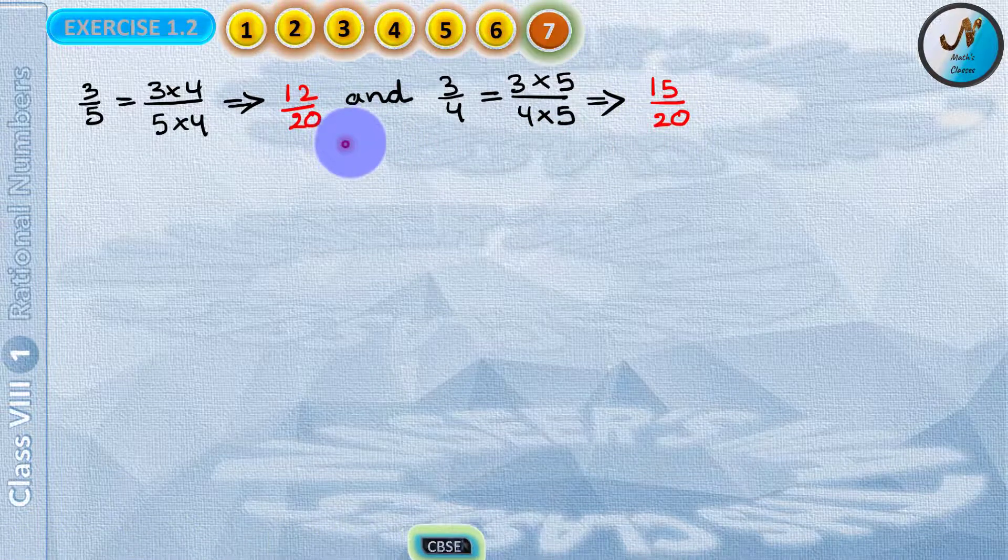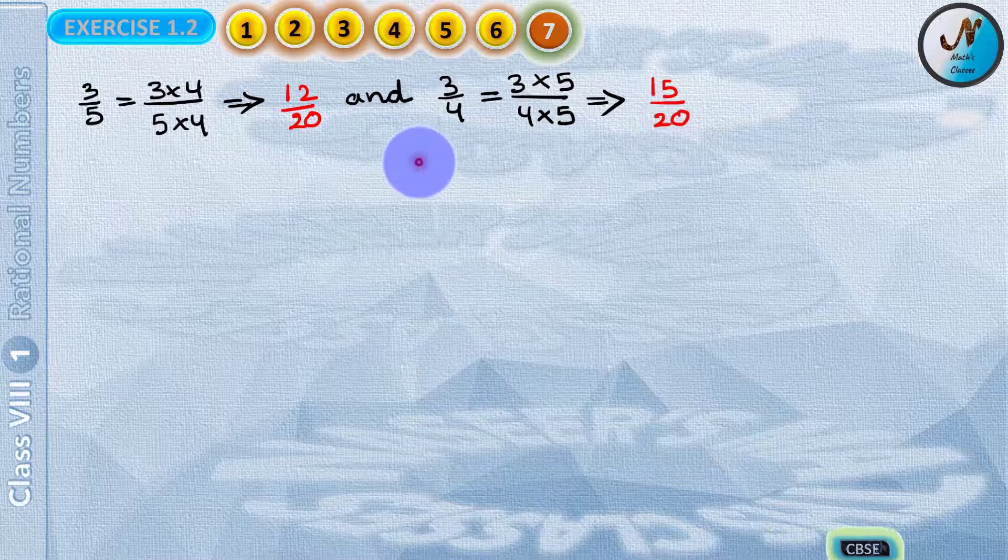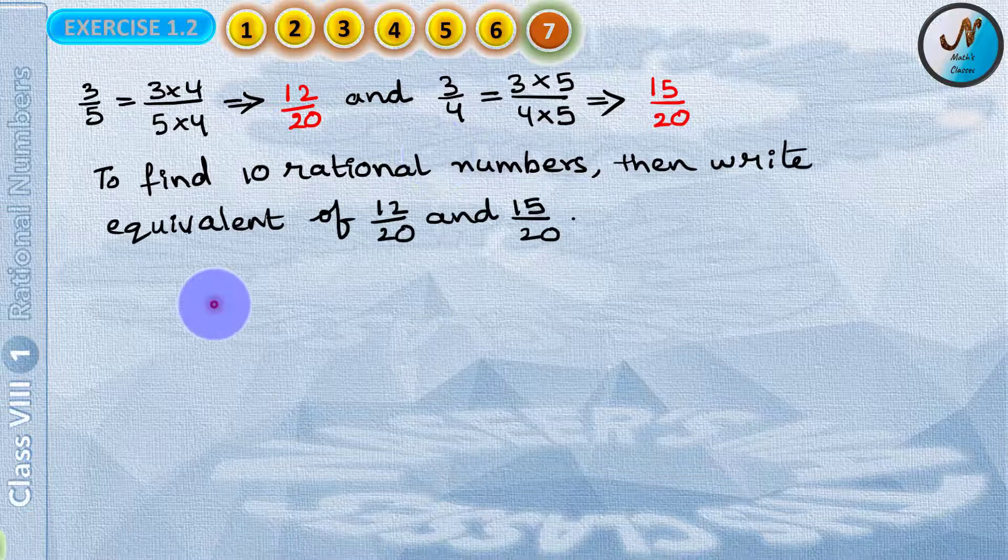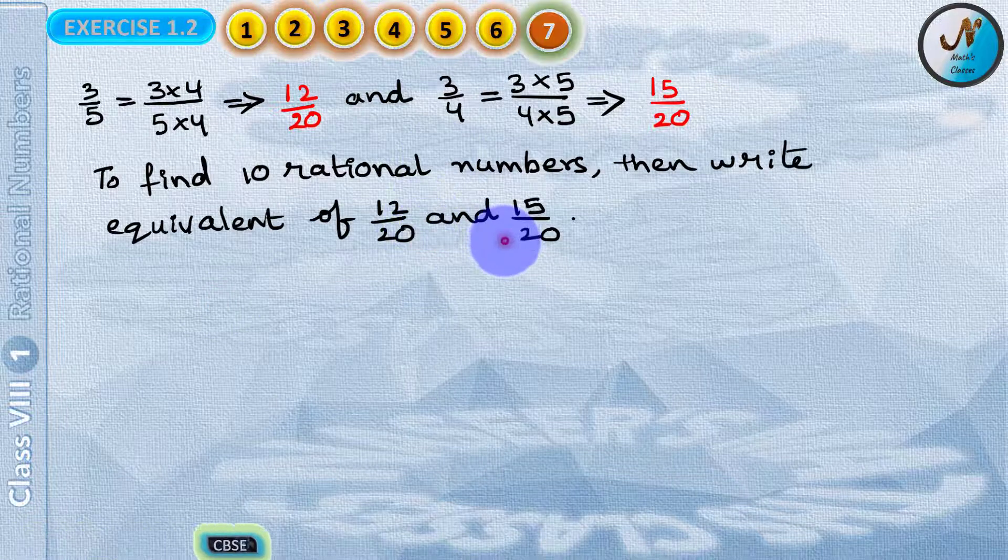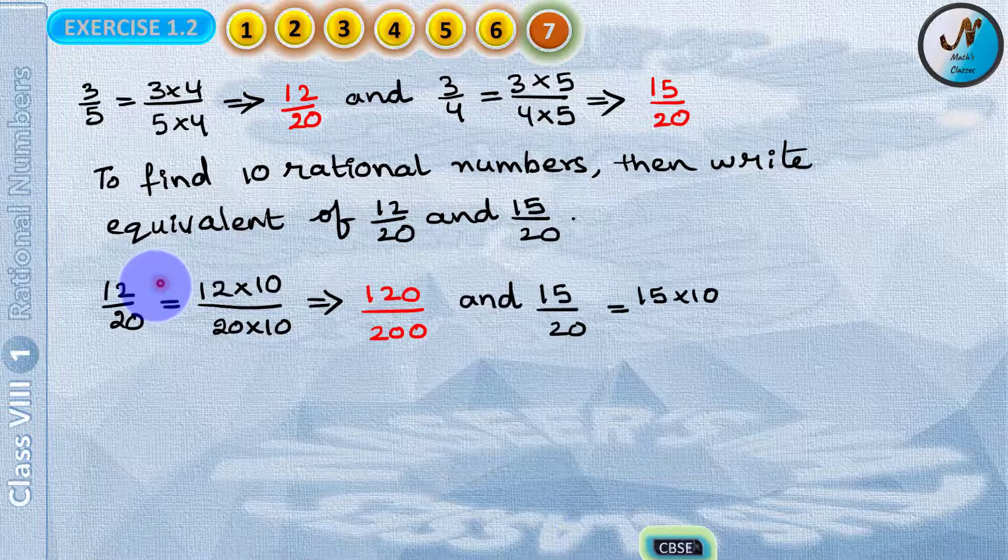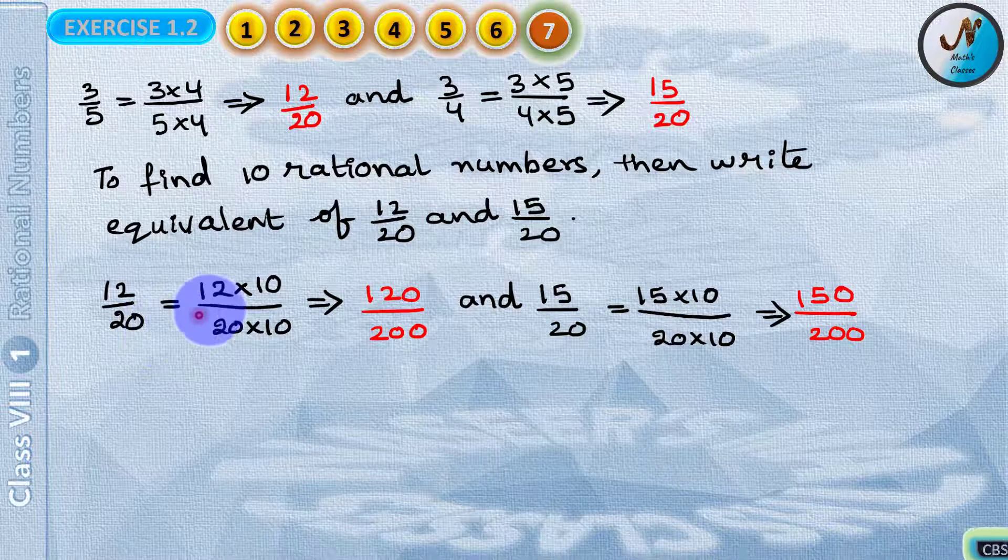But in between 12 by 20 and 15 by 20 we have only two rational numbers, so we have to find the equivalent of 12 by 20 and 15 by 20.